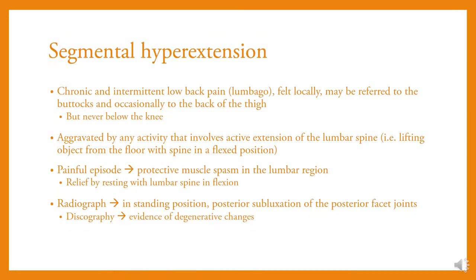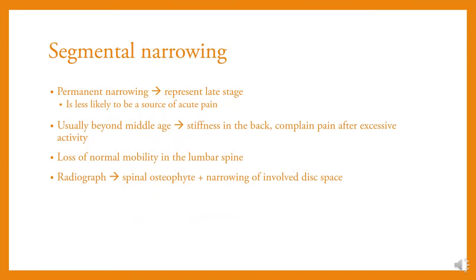Segmental hyperextension presents as chronic and intermittent low back pain felt locally, possibly referred to the buttocks and occasionally to the back of the thigh. It is aggravated by any activity involving active extension of the lumbar spine, such as lifting objects from the floor. Radiograph in standing position shows posterior subluxation of the posterior facet joints. Segmental narrowing represents a late stage usually beyond middle age, with loss of normal lumbar mobility; radiograph reveals spinal osteophytes and narrowing of the involved disc space.